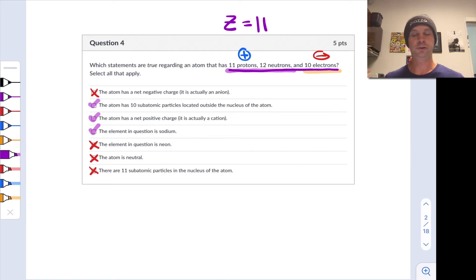There we go, using the counts of protons, neutrons, and electrons to infer information about an atom.